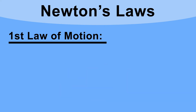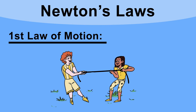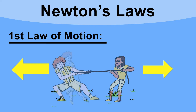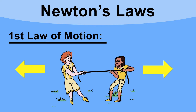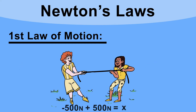Let's look at a simple example of a tug of war. The people on each side are pulling with an equal force of 500 newtons. We show forces in physics using arrows — the bigger the arrow, the bigger the force. The arrows are in opposite directions, so the force to the right is 500 newtons and the force to the left is minus 500 newtons. Adding these gives a resultant force of zero, and the people are stationary.